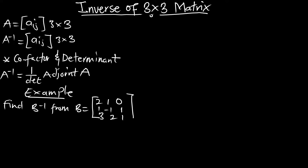This is the 3x3 matrix. We have to find its determinant and also the adjoint, then use it to find the inverse. We are interested in the inverse of matrix B. In this case, the inverse of B is going to be 1 over the determinant of B multiplying the adjoint of matrix B.